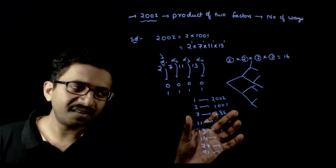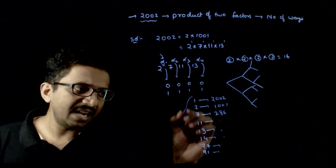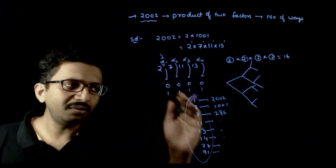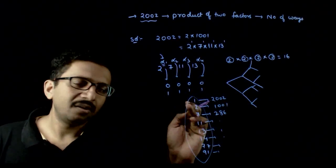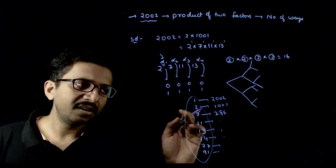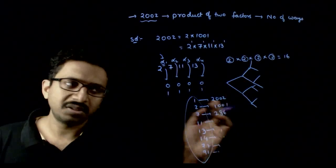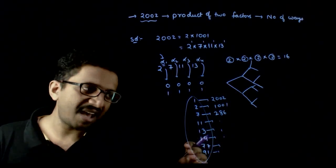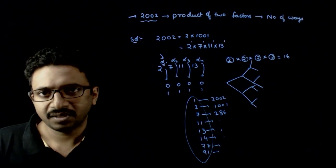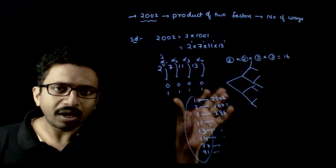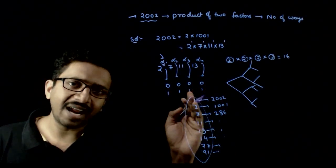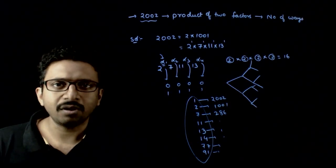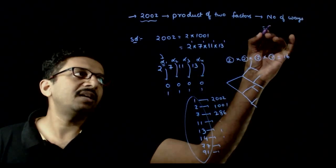Once you have 16 different factors, you have 8 ways in which you can split the number into a product of two numbers — such as 1 into 2002, 2 into 1001, 7 into 286, and so on. Each number has a complementary number, giving 16 factors total and 8 ways to write the number as a product of two factors. So the answer is 8.